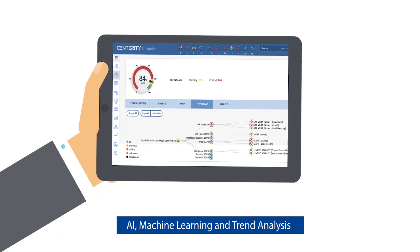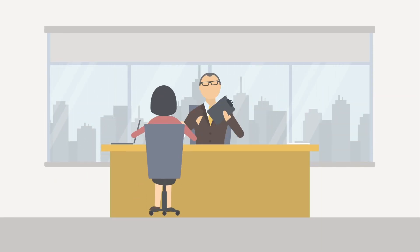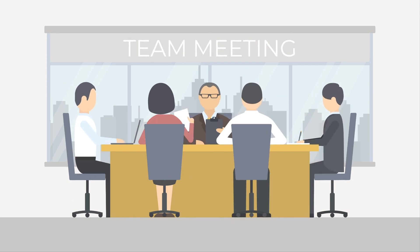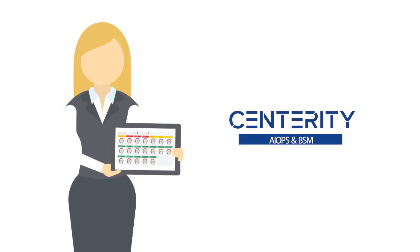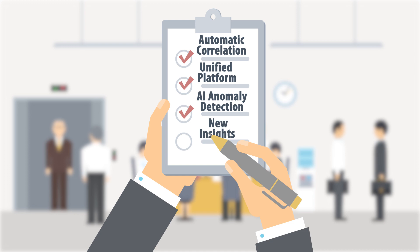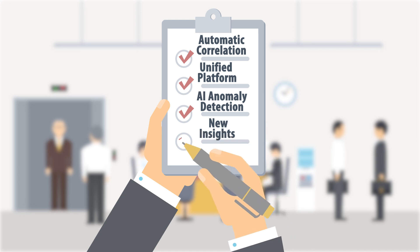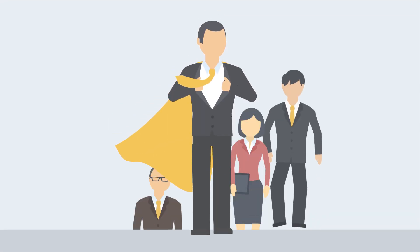AI, machine learning, and trend analysis identify problems before they occur. Within days of implementing Centarity, Luke is evaluating far more than insurance applications, and his team responds to warnings by fixing problems long before the first angry phone call. In a short time, Centarity has replaced multiple isolated monitoring systems with a unified platform, driven by automatic correlation and AI anomaly detection, which allows Luke and his team to discover new insights to persistent problems and further improve performance. Luke looks like a hero.